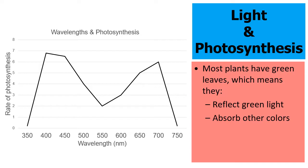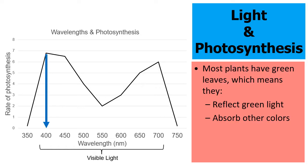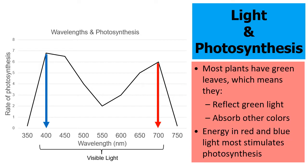Here's a really interesting graph showing wavelengths of visible light along the bottom, with numbers corresponding to various colors. Notice there's a peak around 400 nanometers — that's the wavelength for blue light — and another peak around 700 nanometers, which is the wavelength for red light. This graph shows that the rate of photosynthesis is highest in red and blue light; those are the colors most stimulating for a plant's ability to do photosynthesis.